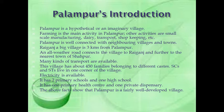Palampur is well connected with neighbouring villages and towns. Rani Gunj, a big village, is 3 km from Palampur. An all-weather road connects the village to Rani Gunj and further to the nearest town of Shahapur. Many kinds of transport are available. This village has about 450 families belonging to different castes. SCs and STs live in one corner of the village. Electricity is available. It has two primary schools and one high school, one primary health centre and one private dispenser.